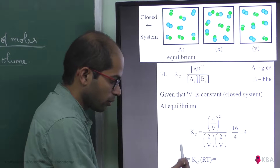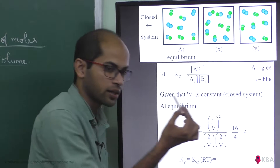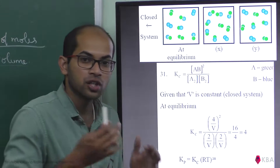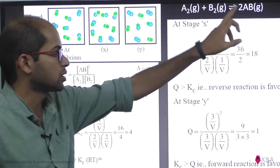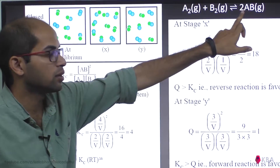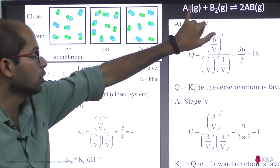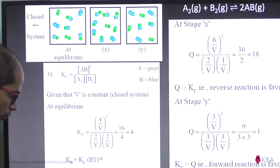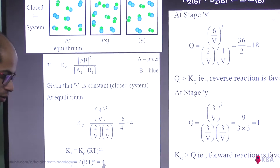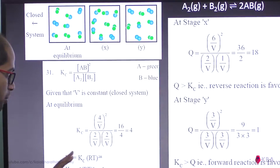So Kc equals 4. For Kp: Kp = Kc × (RT)^ΔNg. Delta Ng is the change in number of moles — products minus reactants. Products is 2 moles, reactants is 1 plus 1 equals 2. So delta Ng = 2 minus 2 = 0. Therefore Kp = 4 × (RT)⁰ = 4 × 1 = 4. So both Kc and Kp have the value 4.